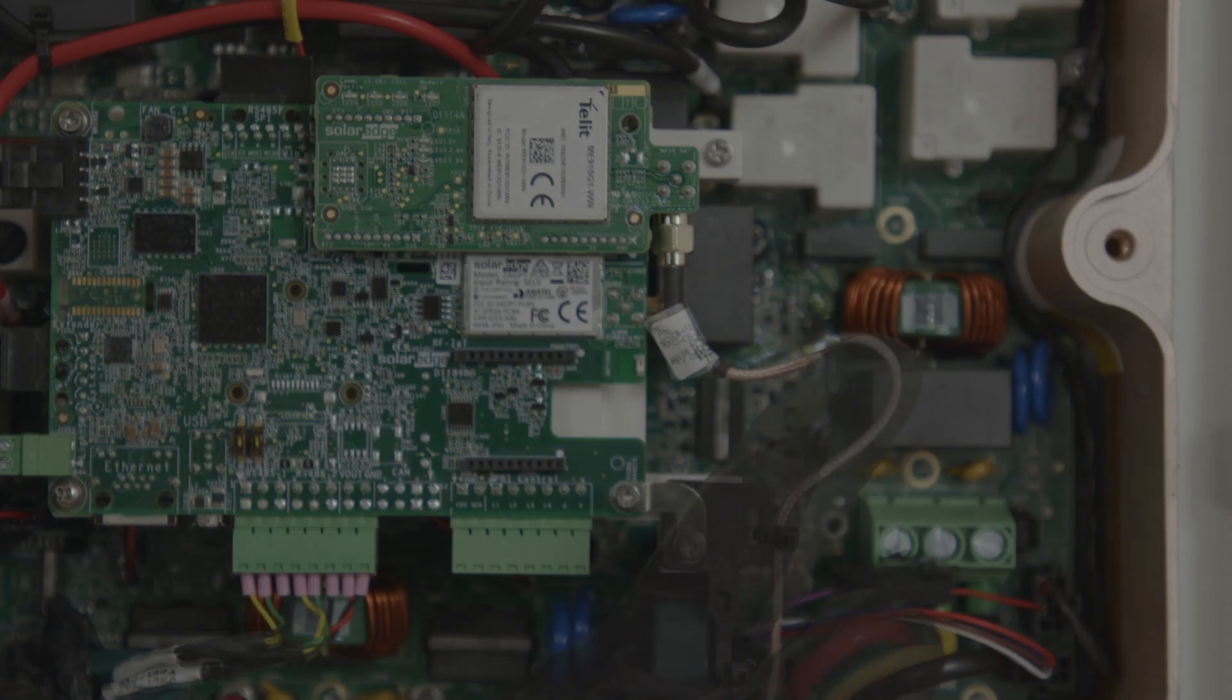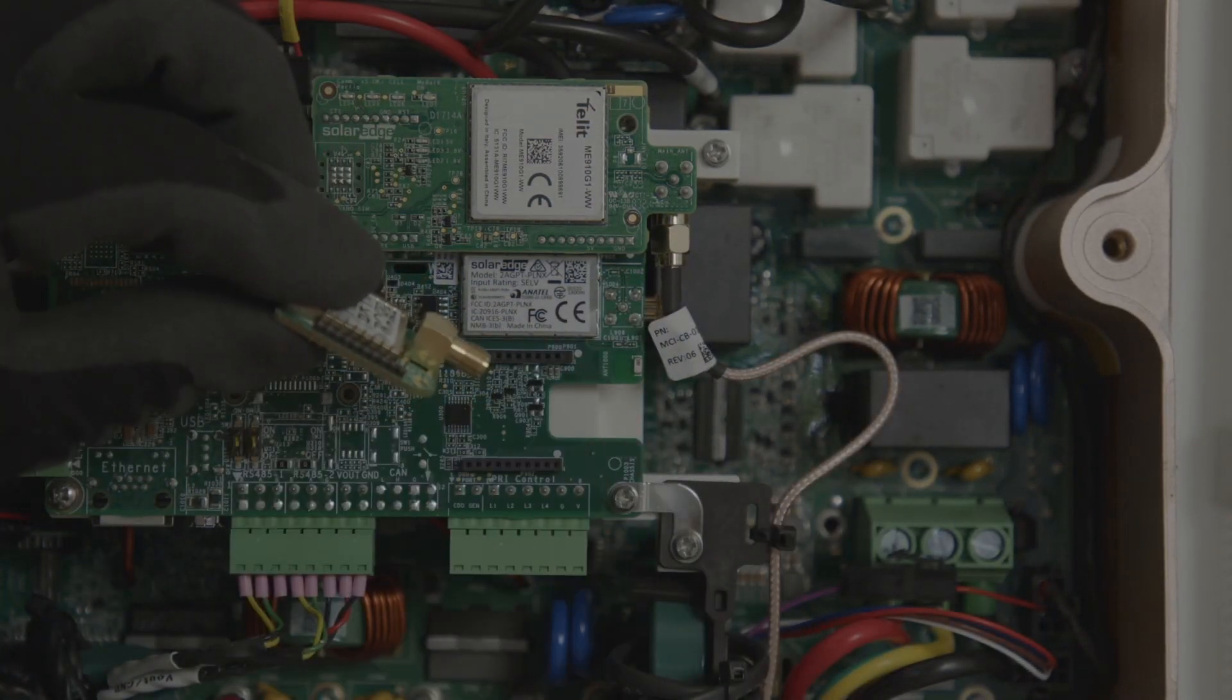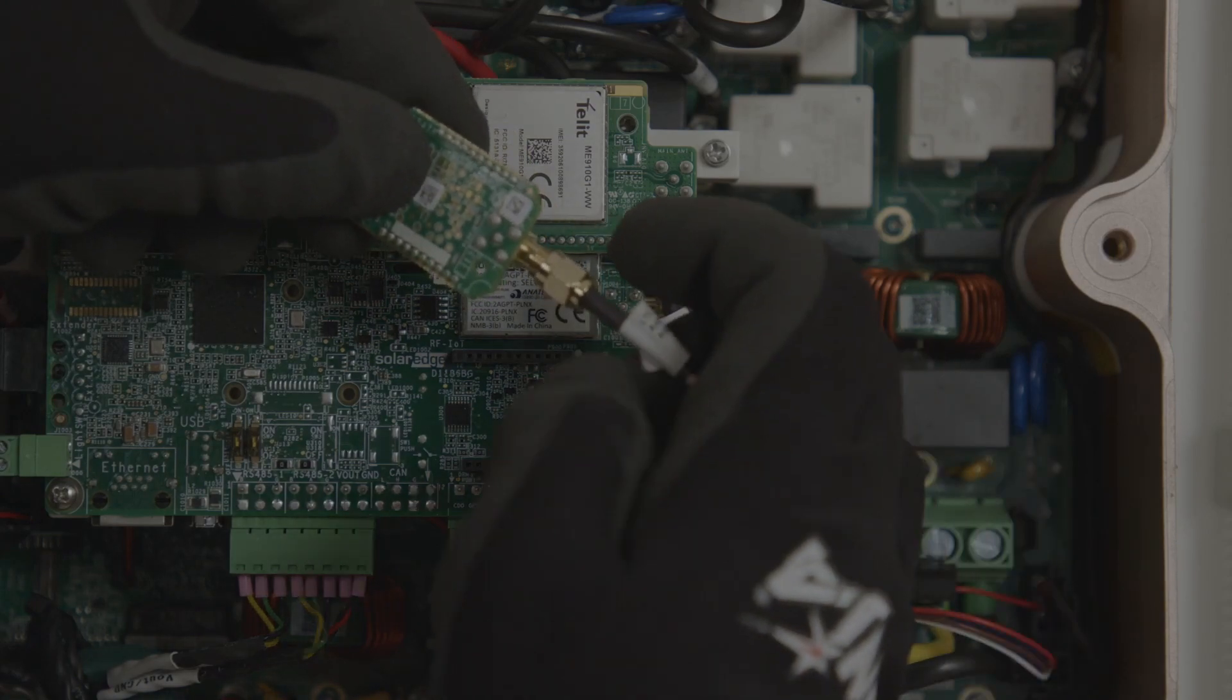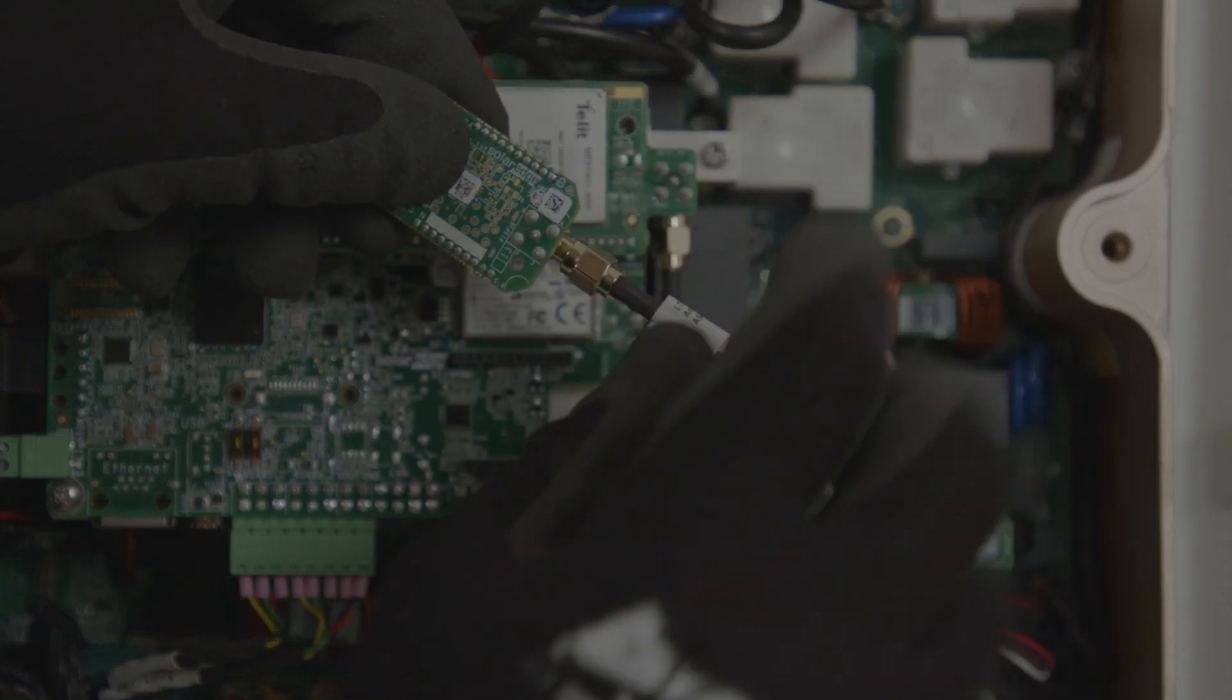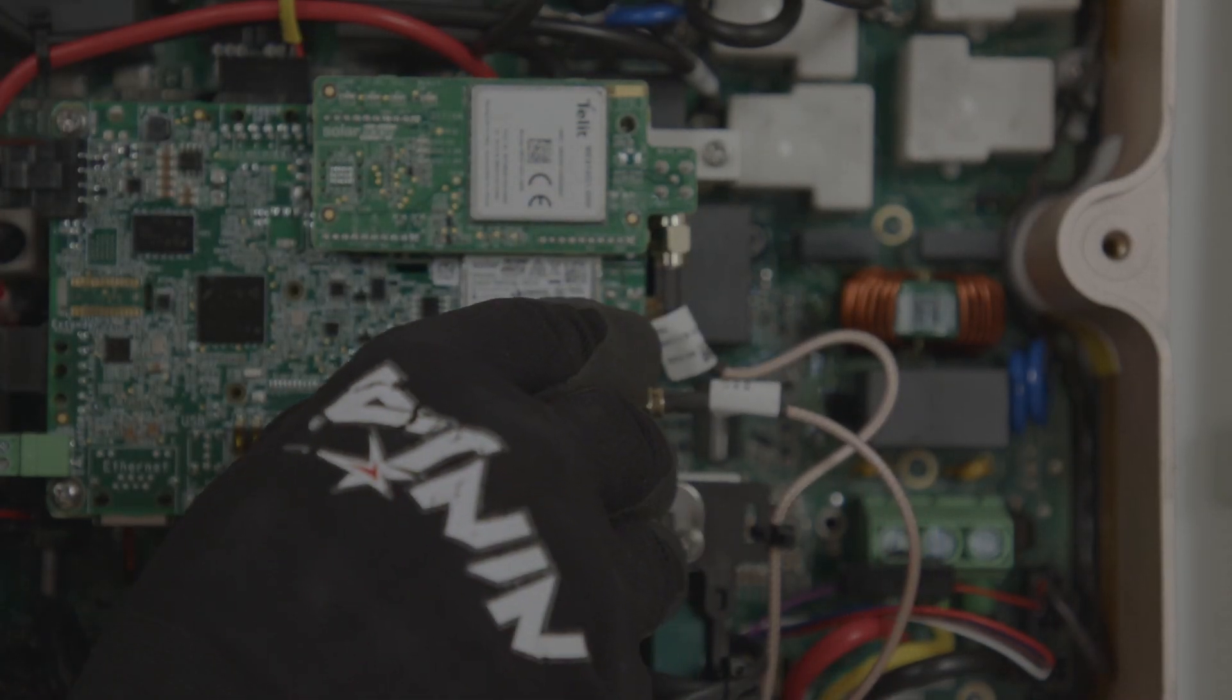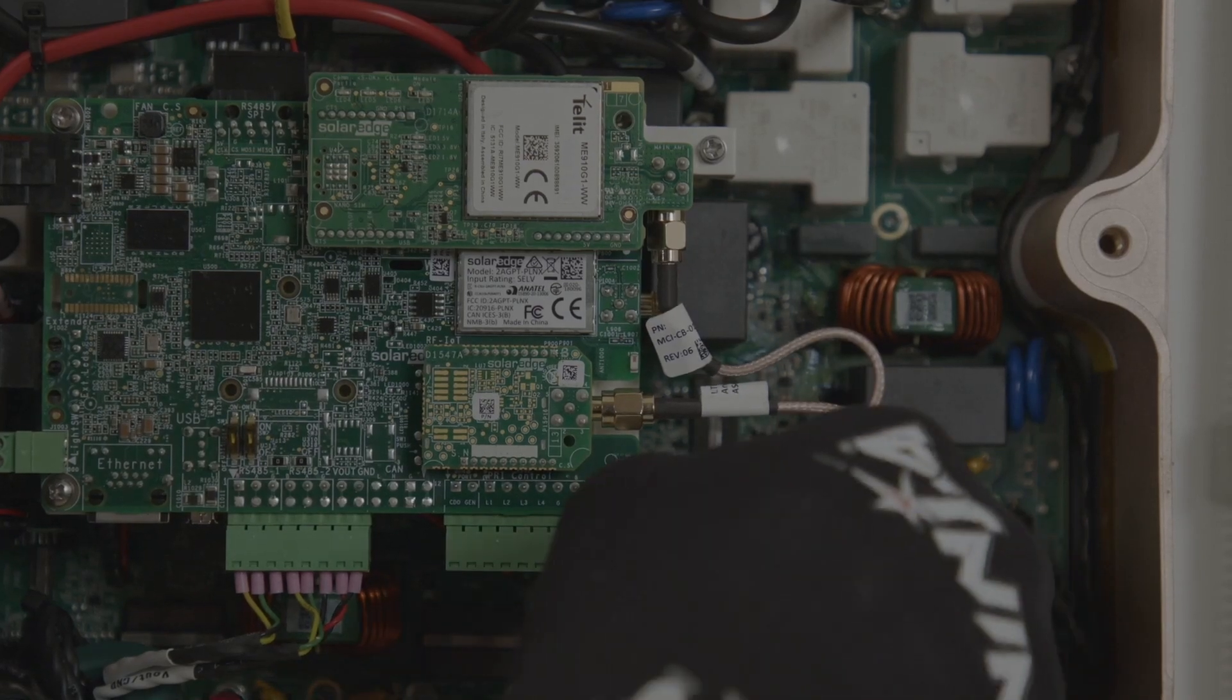In addition, for communication with SolarEdge smart home devices, the SolarEdge home battery or the inline meter, you can connect the additional card for the SolarEdge home network. This will also require an additional antenna, which you can connect to the other side of the inverter and plug the card in.